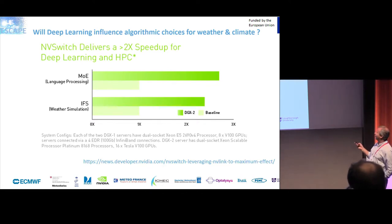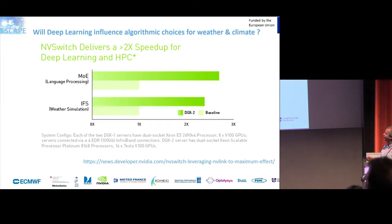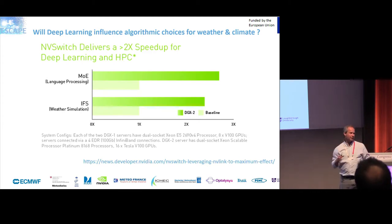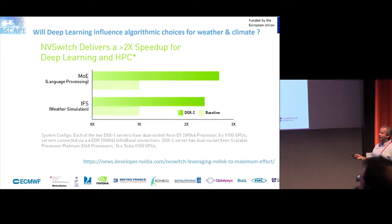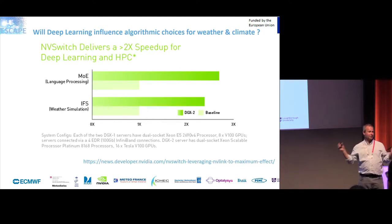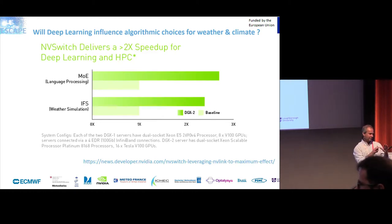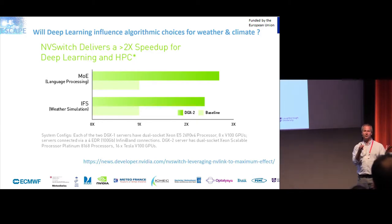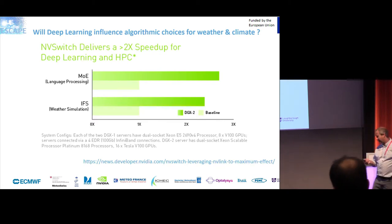Will deep learning influence algorithmic choices for weather and climate? From the NVIDIA website, two key users of their deep learning hardware with NVSwitch technology — massive computing power connected with high-speed connections — are perfect for spectral transforms. They achieved a great speed-up with our model using this arrangement. The heart of spectral transforms is DGEMMs, SGEMMs, and FFTs, which go very fast on these architectures.